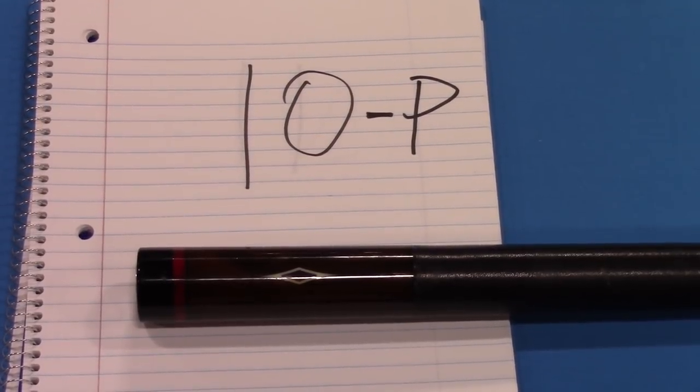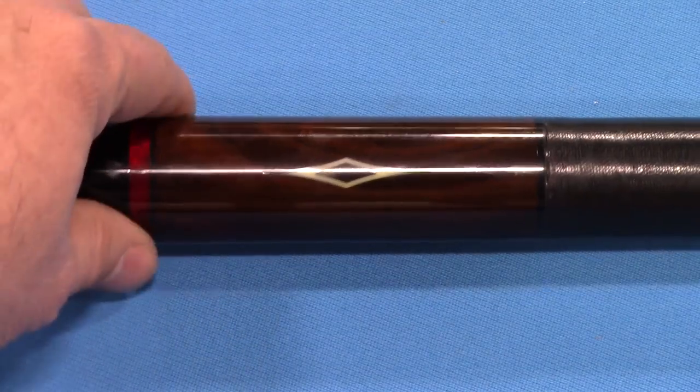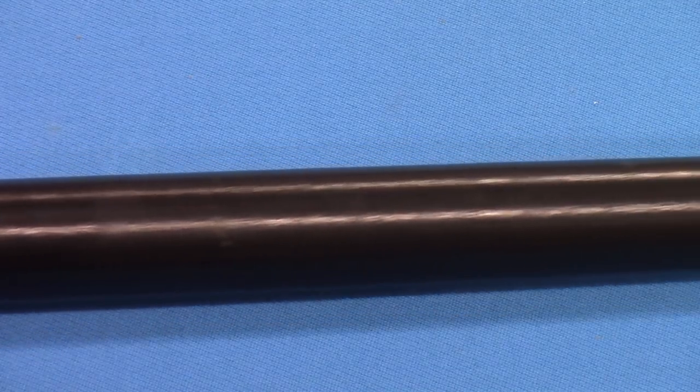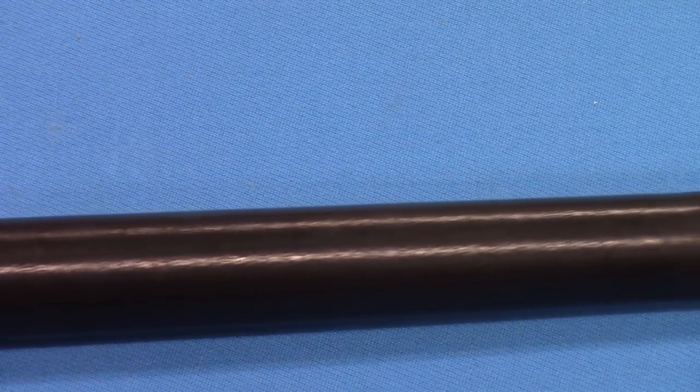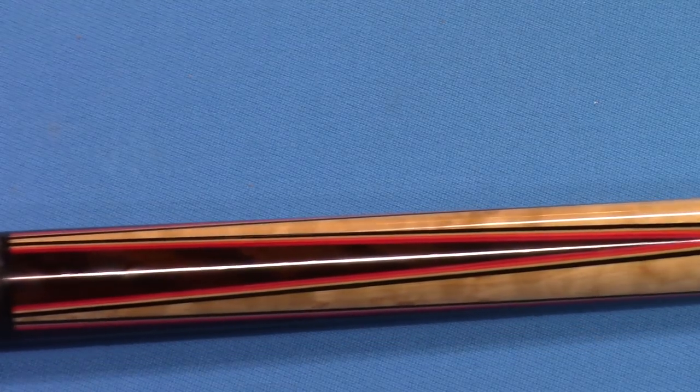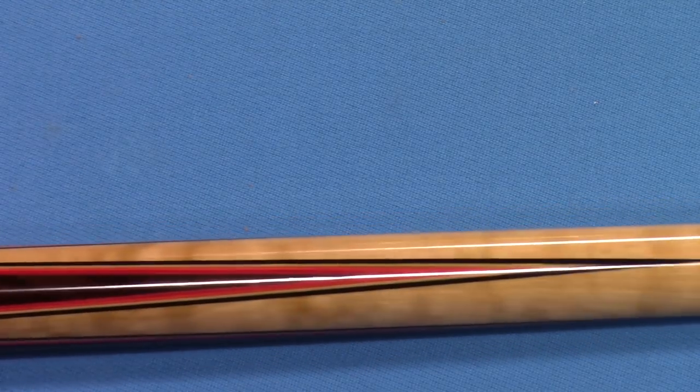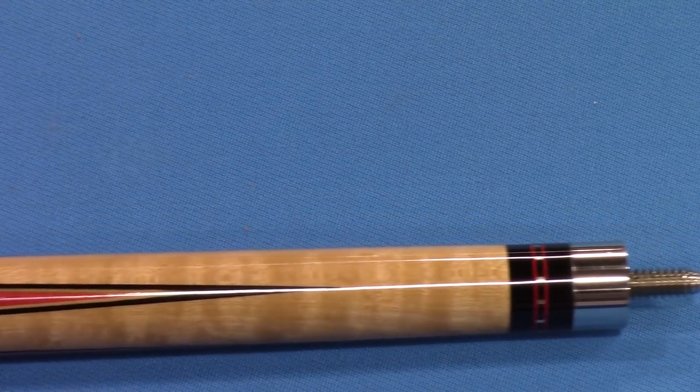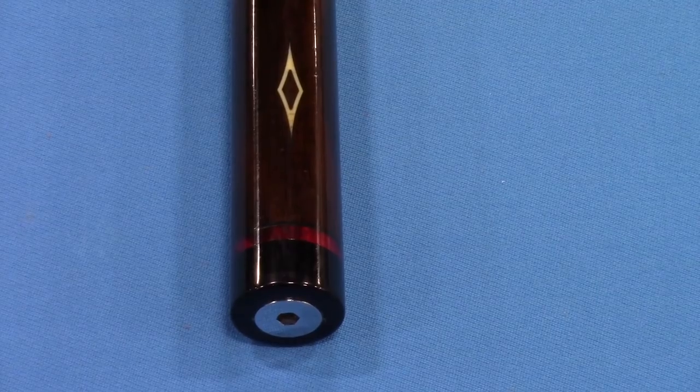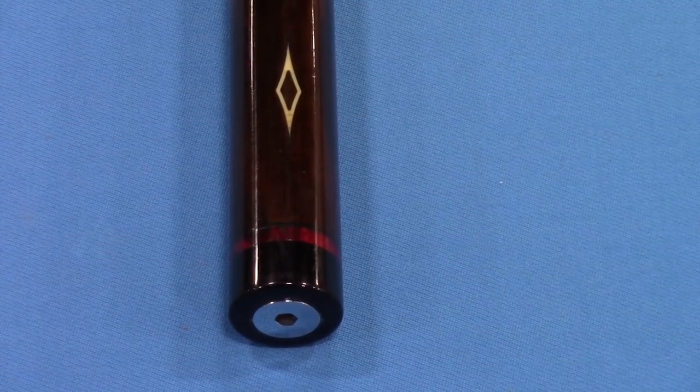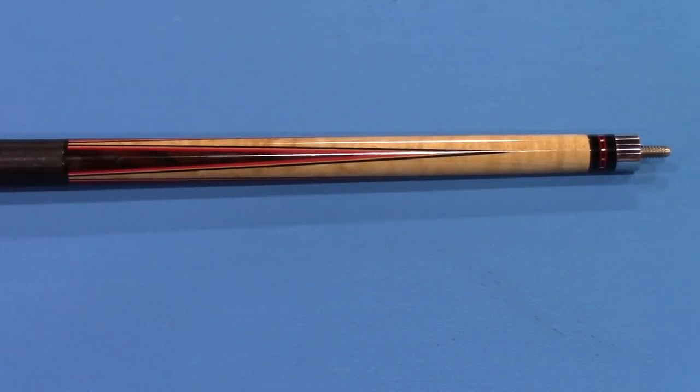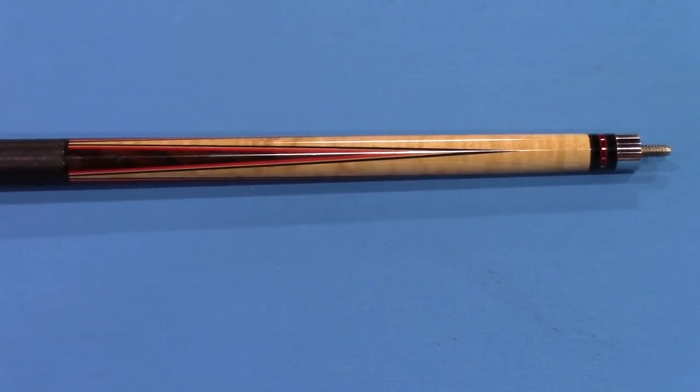Okay, our next cue is a points cue. And this is cocobolo as well as maple veneers there. See how nice the points are. Silver inlays. Gorgeous cue. Really nice work there.